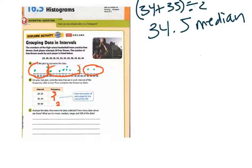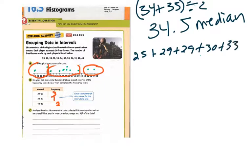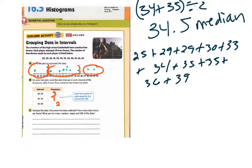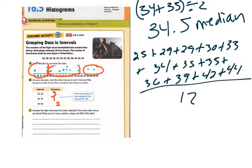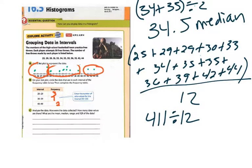Now for the mean, I add all the values together: 25 plus 29 plus 29 plus 30 plus 33 plus 34 plus 35 plus 36 plus 39 plus 42 plus 44, then divide by 12. That gives me 411 divided by 12, which equals 34.25 for my mean.